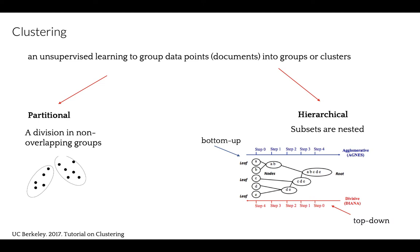It can be divided into two main types: agglomerative and divisive. Agglomerative clustering, also known as AGNES, agglomerative nesting.